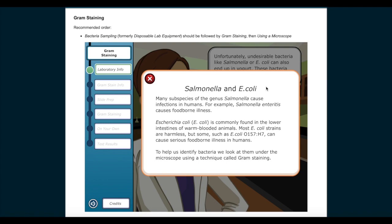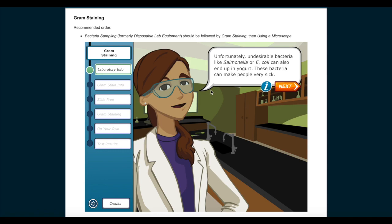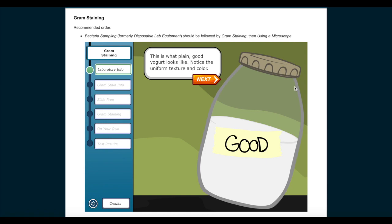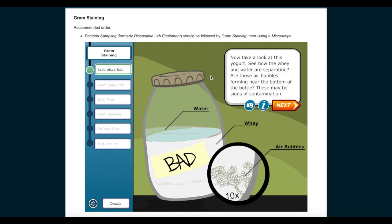To help us identify bacteria, we look at them under the microscope using a technique called Gram staining. This is what plain, good yogurt looks like. Notice the uniform texture and color. Now take a look at this yogurt. See how the whey and water are separating? Are those air bubbles forming near the bottom of the bottle? These may be signs of contamination.